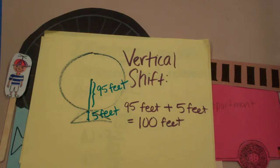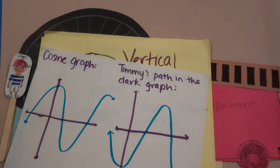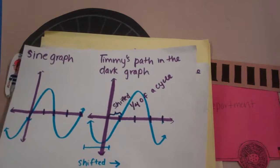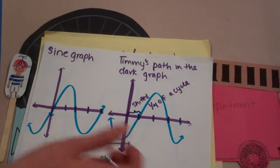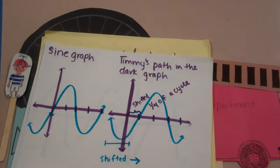If they were to use a cosine equation, they would simply have to put a negative sign in front of the amplitude, as the graph would look like a flipped version of a normal cosine equation. However, if they were to make it a sine equation, the graph would be shifted one-fourth of the cycle to the right. One cycle for the Ferris Wheel is 24 seconds, and one-fourth of that is 6 seconds, which means there would be a phase shift of 6 added to the equation. They then came up with these equations.